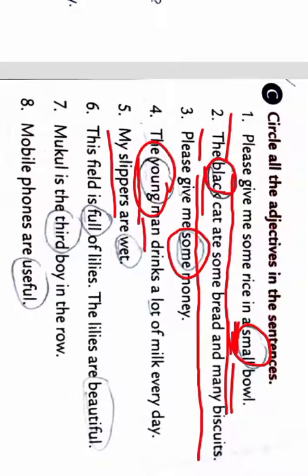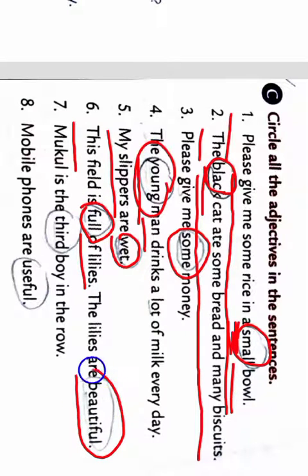Then 5: My slippers are wet. Slippers how are they? Wet. So wet is adjective here. Six: The field is full of lilies. Full of lilies means there are lots of lilies and the lilies are beautiful. So here full of lilies is the adjective.